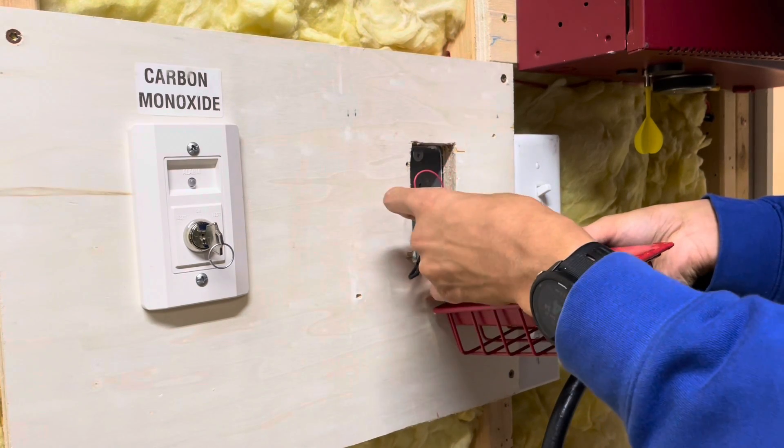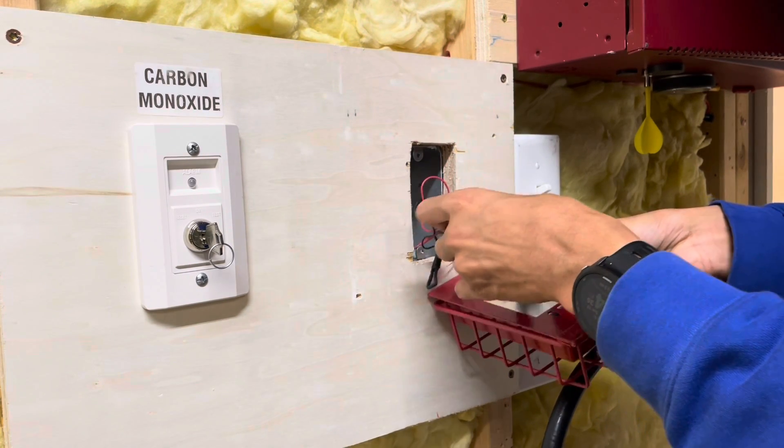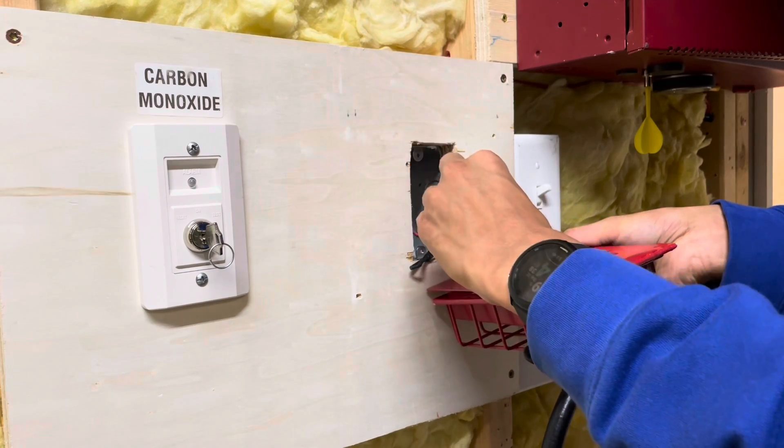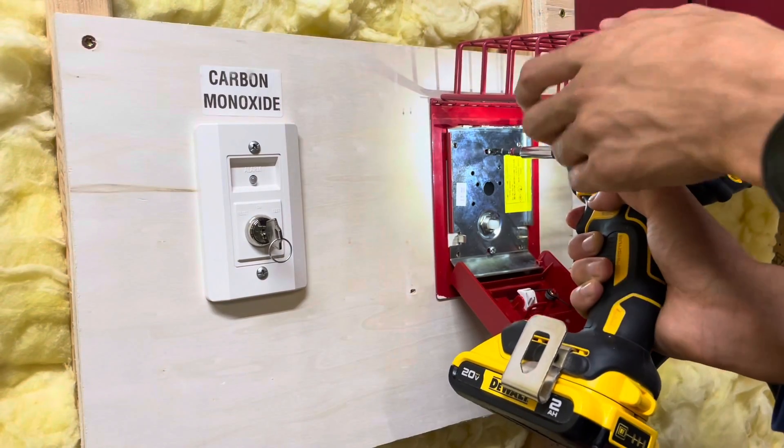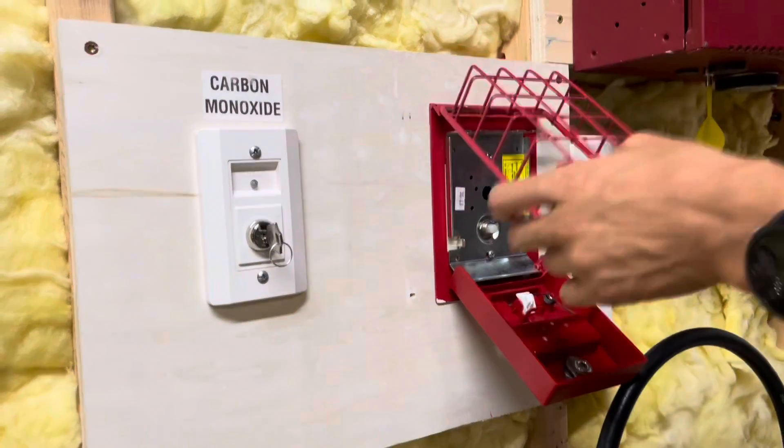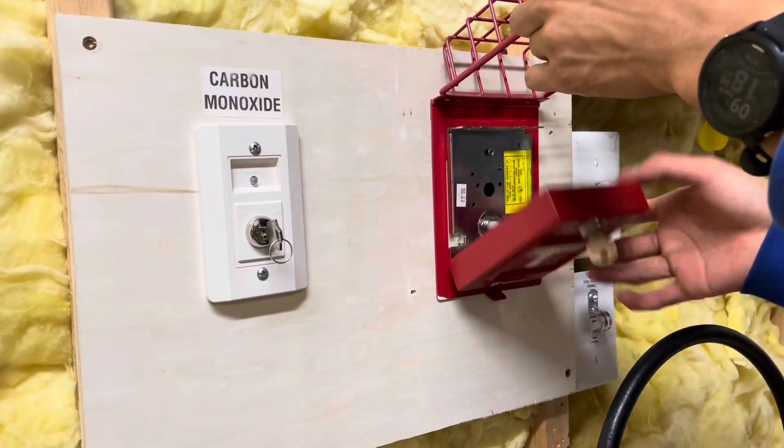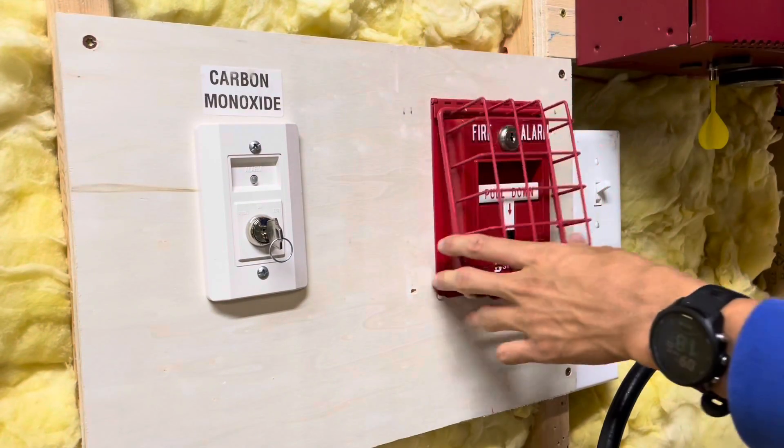Put one lead of the end of line resistor in as well because this is the last device on the circuit. It's pretty simple I guess. You're just sending the screws through the cage. To do that you can close the station and shut the cage.